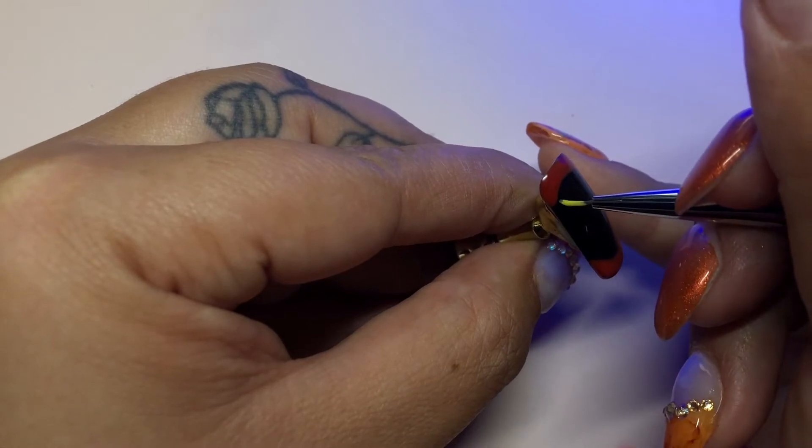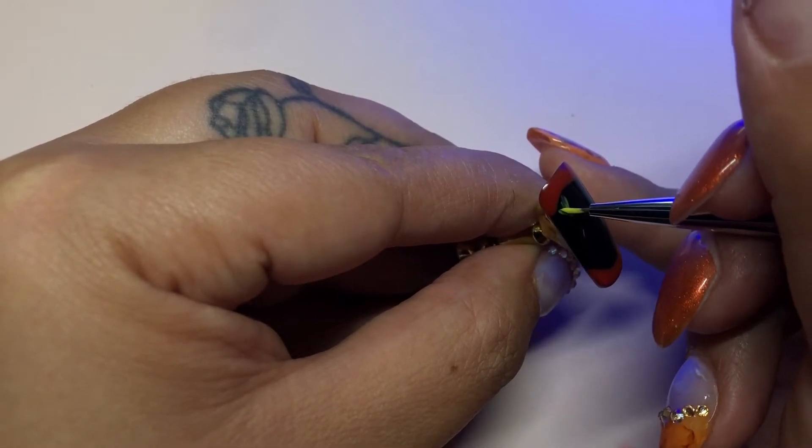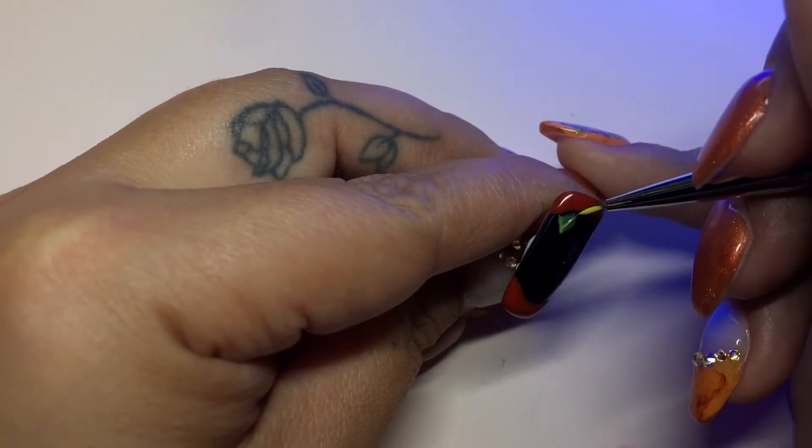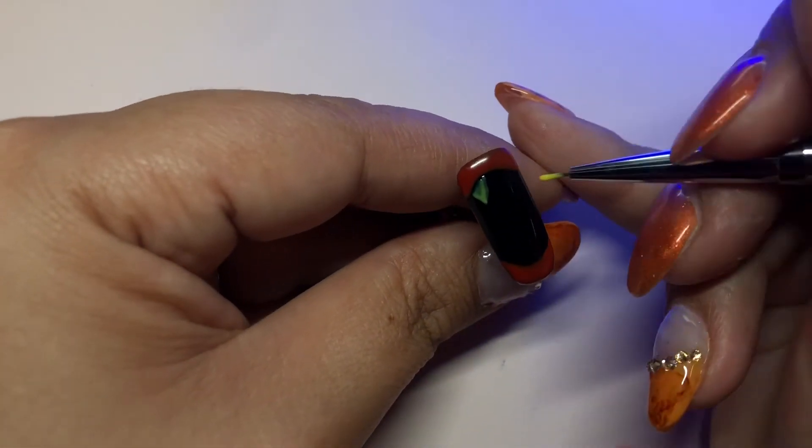After I cure the first layer, I'm going to come back and do the teeth. I'm using yellow and just going to draw some little triangles and make them different sizes.